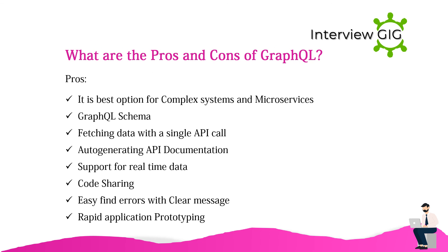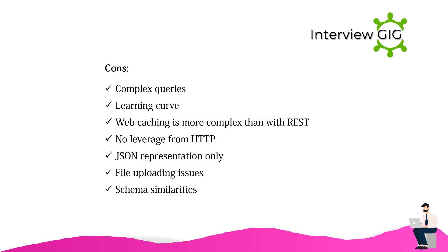What are the pros and cons of GraphQL? Pros: best option for complex systems and microservices, GraphQL schema, fetching data with a single API call, auto-generating API documentation, support for real-time data, code sharing, easy to find errors with clear messages, rapid application prototyping. Cons: complex queries, learning curve, web caching is more complex than with REST, no leverage from HTTP, JSON representation only, file uploading issues, schema similarities.